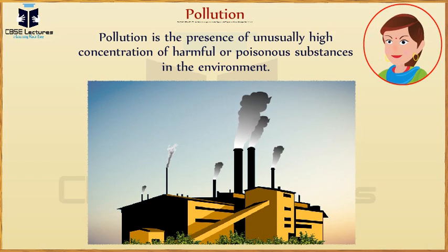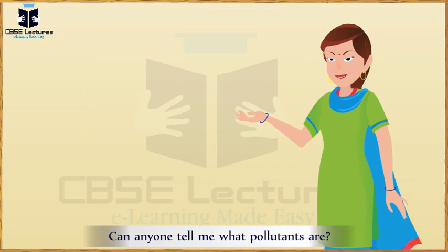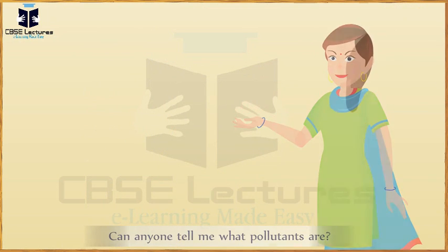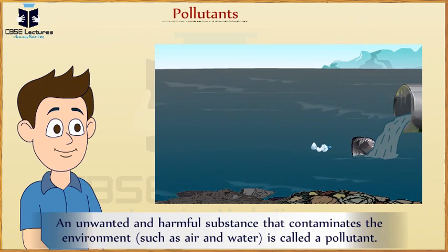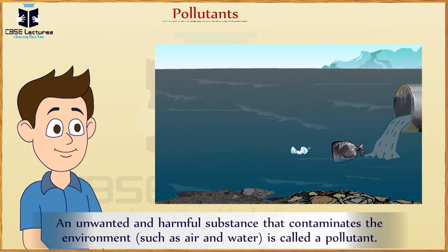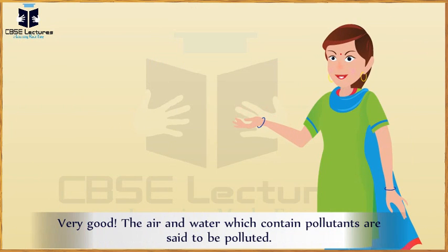Today we will discuss different types of pollution and the effects on our planet. Can anyone tell me what pollutants are? An unwanted and harmful substance that contaminates the environment, such as air and water, is called a pollutant. Very good. The air and water which contain pollutants are said to be polluted.